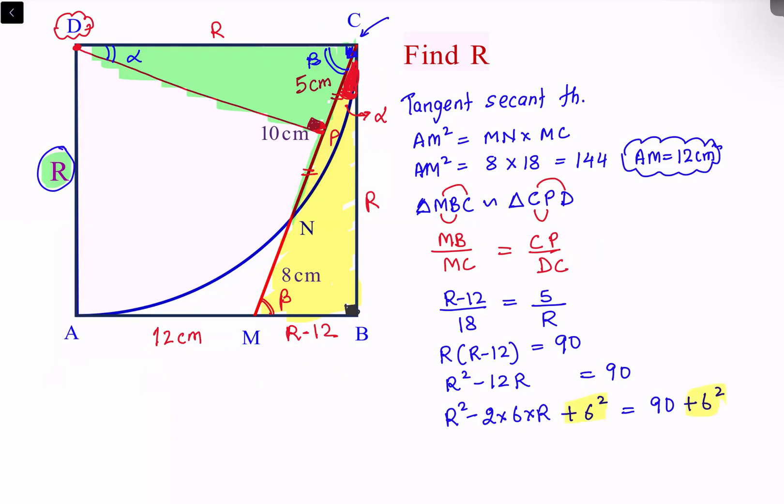So the left side will become a complete square: a square plus b square minus 2AB, so (R minus 6) whole square. And the right side is 126.